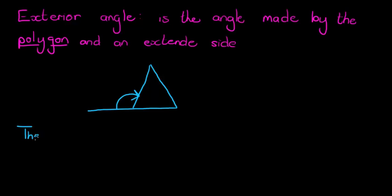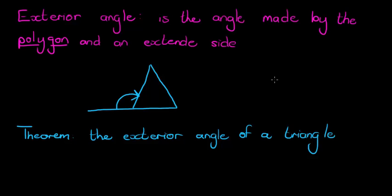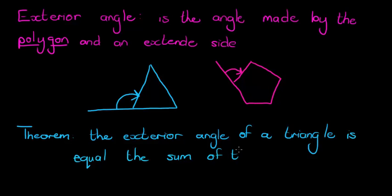Now the theorem says that the exterior angle of a triangle, so I'm specifically talking about the exterior angle of a triangle, is equal to the sum. What does sum mean? Added together. The sum of the opposite interiors.